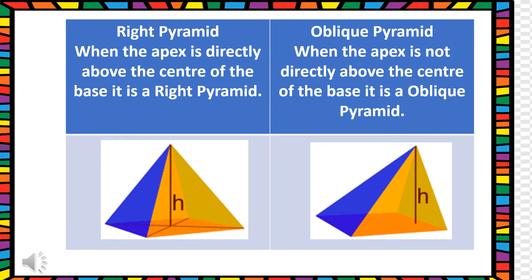As we discussed, a prism can be a right prism or an oblique prism. Similarly, a pyramid can also be a right pyramid or an oblique pyramid. When the apex is directly above the center of the base, it will be called a right pyramid. When the apex is not directly above the center of the base, then it will be an oblique pyramid.